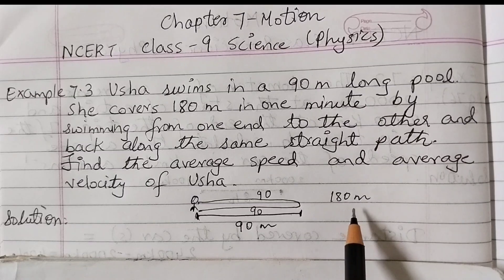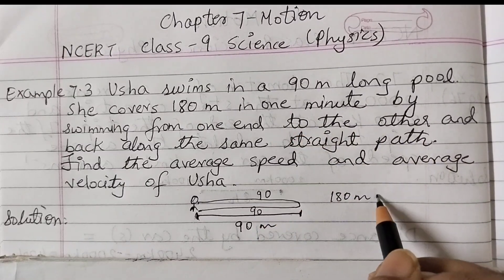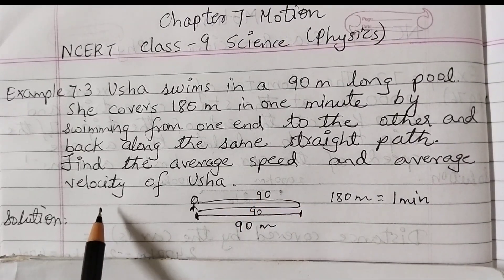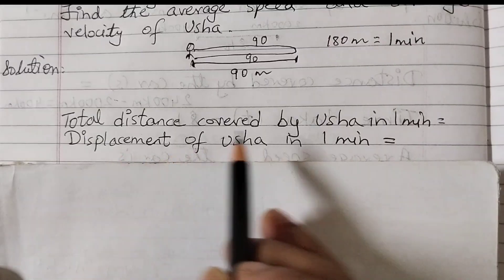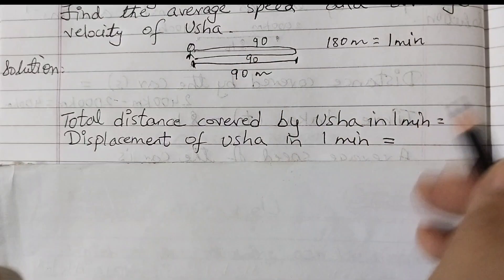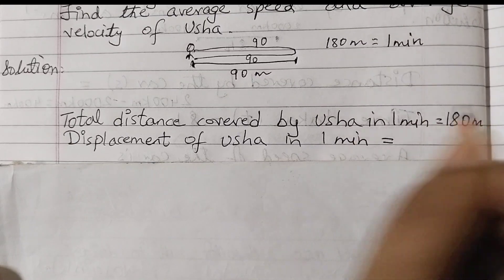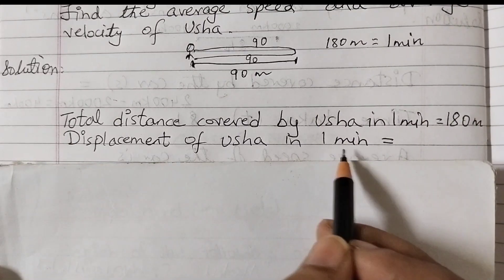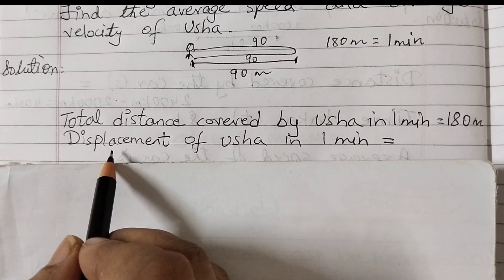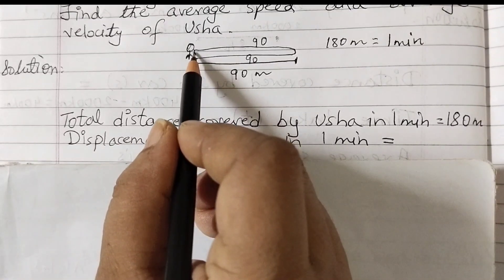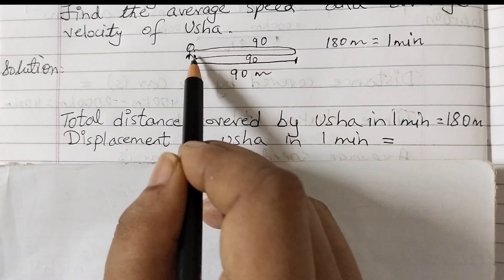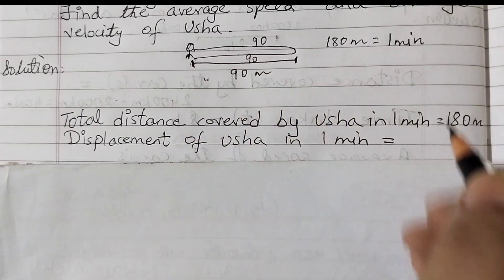She traveled 180 meters in one minute. Total distance covered by Usha in one minute is 180 meters — 90 plus 90. The displacement of Usha in one minute: displacement means the shortest distance between the initial point and the final point. She starts here, goes to the other end, and comes back to the same position, so the displacement is 0 meters.